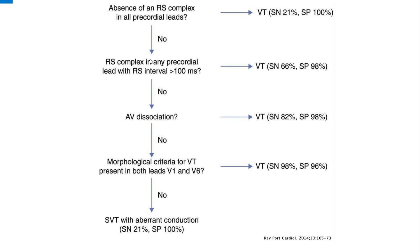The next step is to localize the QRS complex which has R and S waves, and see whether the distance from the R wave to the nadir of the S wave is more than 100 milliseconds. If it is more than 100 milliseconds, it is definitely VT with a specificity of 98 percent. If the RS interval is less than 100 milliseconds, then we have a third step.